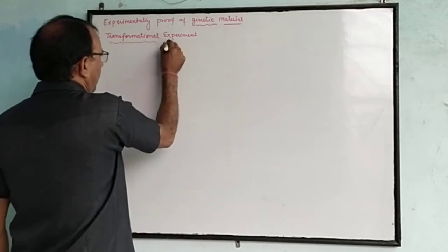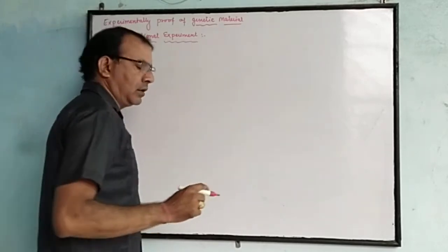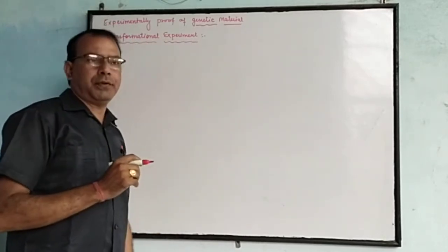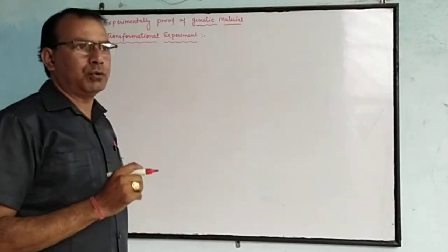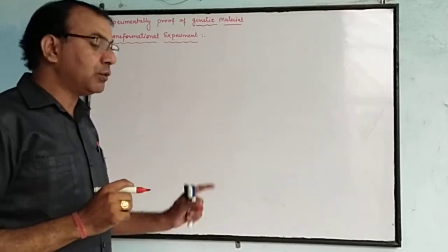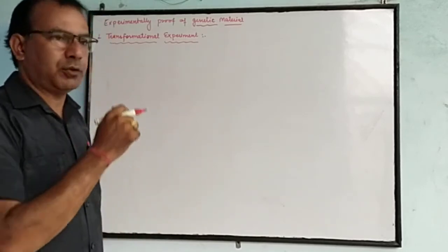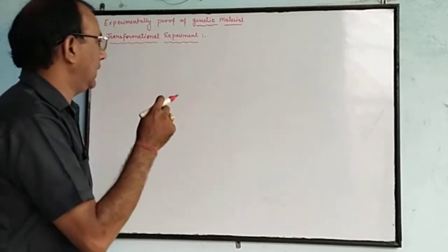Frederick Griffith tried to show which one is the genetic material in 1928. He started to demonstrate the concept of genetic material through experimentation.